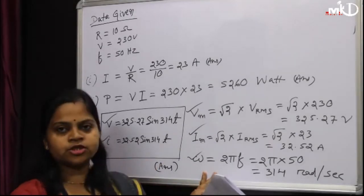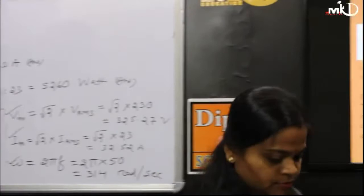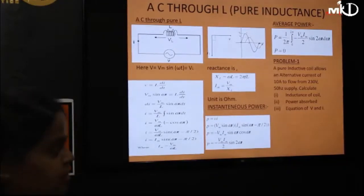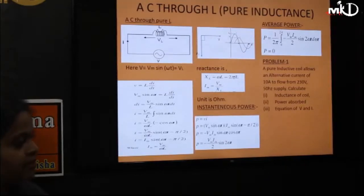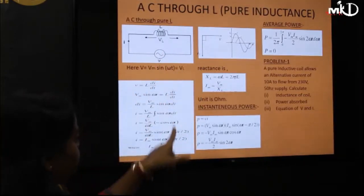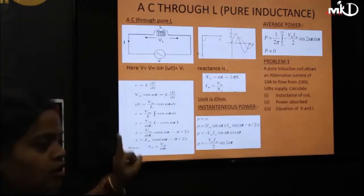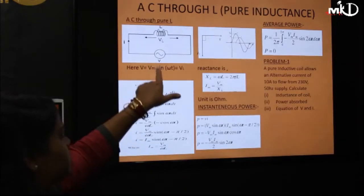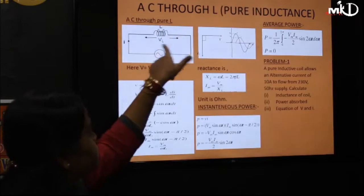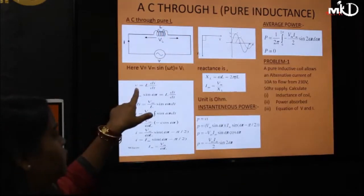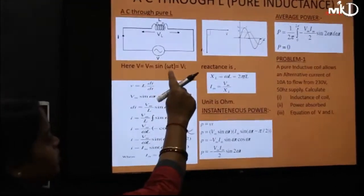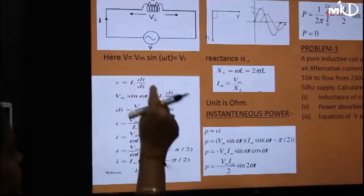Next we will study AC through a pure inductive circuit. Here we can see that we have only inductance in the circuit. We need to find the relation between voltage and current. V = Vm sin(ωt), which also equals VL, the voltage drop across the inductor. We know that VL = L di/dt, so Vm sin(ωt) = L di/dt.